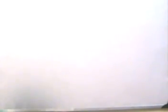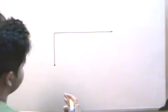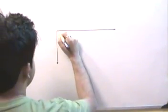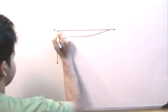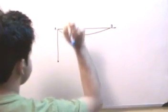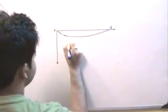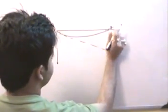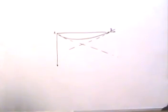Let's say this is my y-axis and this is my x-axis, and the beam was originally aligned to the x-axis. The beam was loaded transversely, and the beam's elastic line or deflected curve looks like this. Let us say this point is A and this point is B. If we draw tangents at A and B, they will look like this.